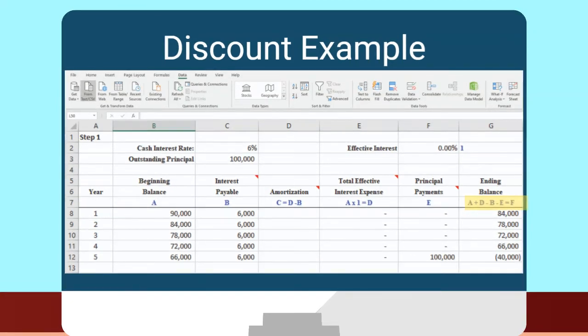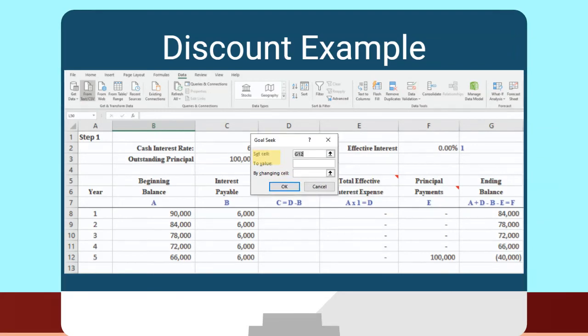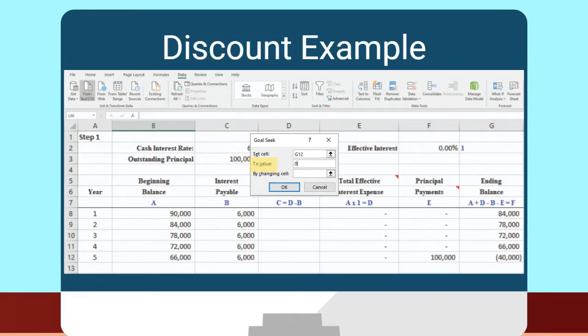Alright, what's next? Now we use the goal seek function. This can be found at the top of Excel in the data tab. In this version, over to the right, is the what if analysis drop down. In there, you'll find the goal seek. We want our ending balance to be zero. So for set cell, we put cell G12. And for two value, we put zero. In the last space, we put the effective interest at F2, which is the cell to be changed. Then it pops out your answer.